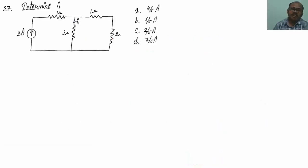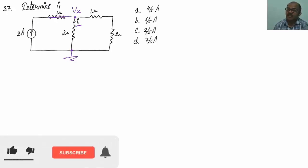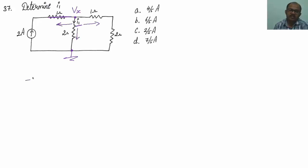In the seventh question, we have to calculate the values of I1. Let me take this node as Vx and let me take this principal node to be at the ground. We know that a current source in series with a resistor — that resistor can be treated as a short circuit. Applying nodal analysis at Vx, I will be getting: minus 2 plus Vx divided by 2 plus Vx divided by 3 (since 1 plus 2 equals 3) which equals 0.